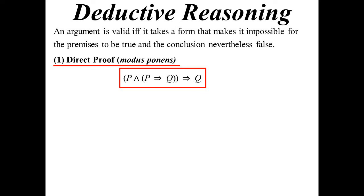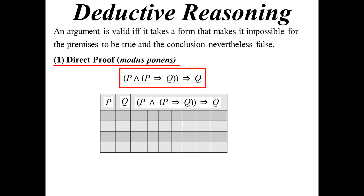Now, to prove that this is always true regardless of the truth of P and Q, I'm going to put it into one of our truth tables. There are only four possibilities in this case. We work from the inside out — P implies Q — and the only one that was false there was true implies false. So we get true, false, true, true.